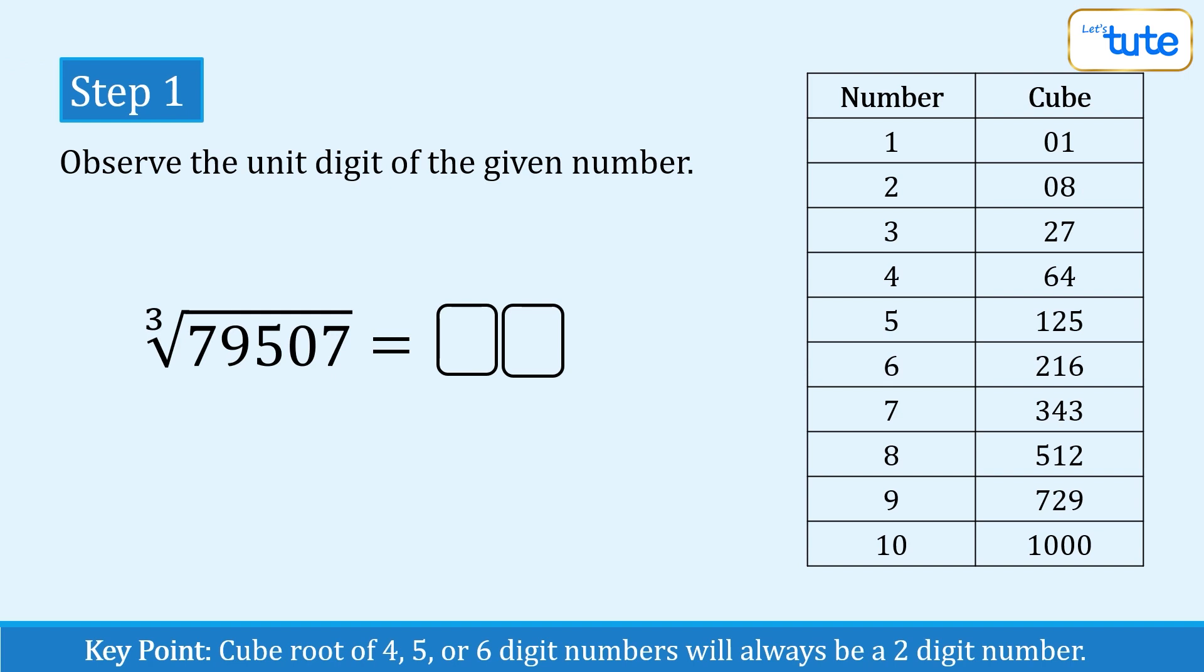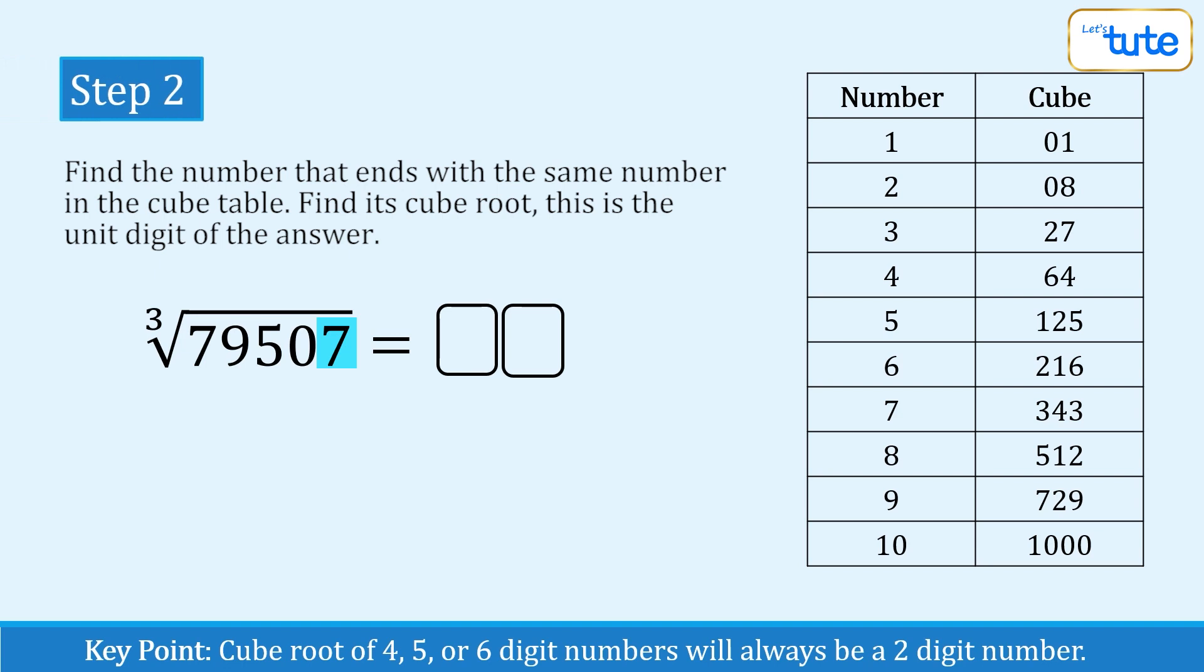For the first step, we will observe the unit digit of our given number, that is 7. The second step is to find out the number whose cube ends with 7. We can see that the number 27 ends with digit 7, whose cube root is 3. As a result, this 3 will be the unit digit of the cube root of 79507.